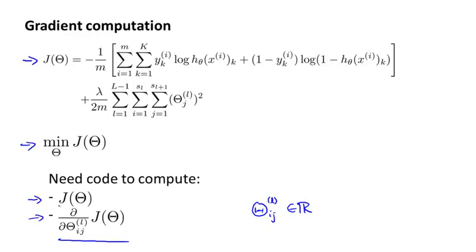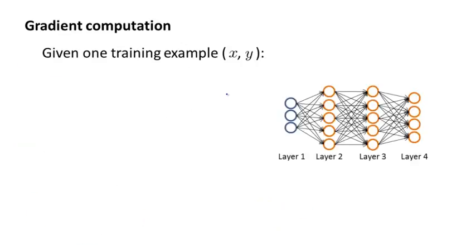In order to compute the cost function J of theta, we just use this formula. What I want to do for most of this video is focus on how we can compute these partial derivative terms. Let's start by talking about the case of when we have only one training example. Imagine that our entire training set comprises only one training example, which is a pair xy, and let's step through the sequence of calculations we would do with this one training example.